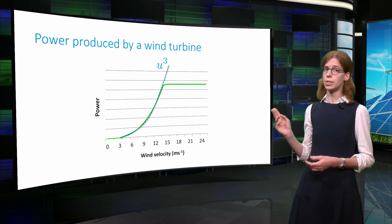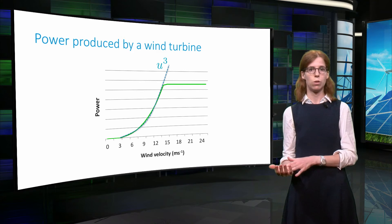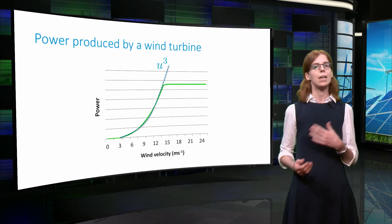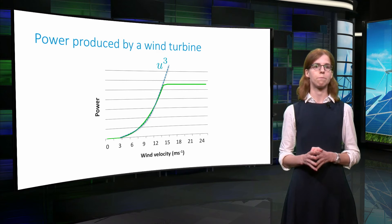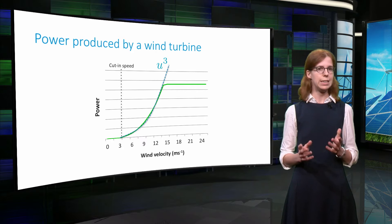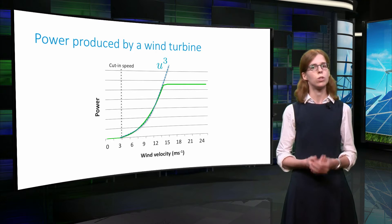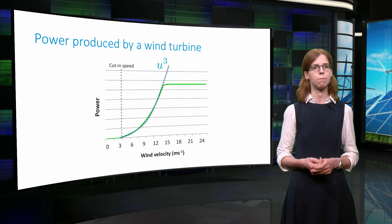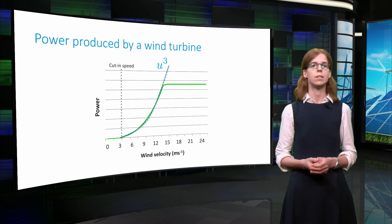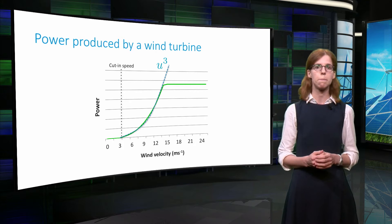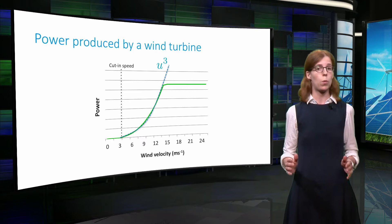This is shown on this plot, which illustrates the power as a function of the wind speed. However, this holds only for a certain range of wind speeds. Indeed, at very small speeds, there is not enough wind for the turbine to actually rotate. The wind speed at which the rotor starts to rotate is called the cut-in speed. Below this value, no power is produced.